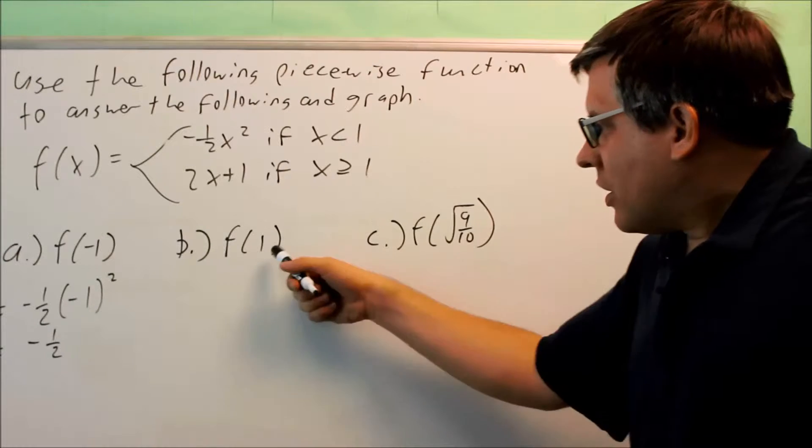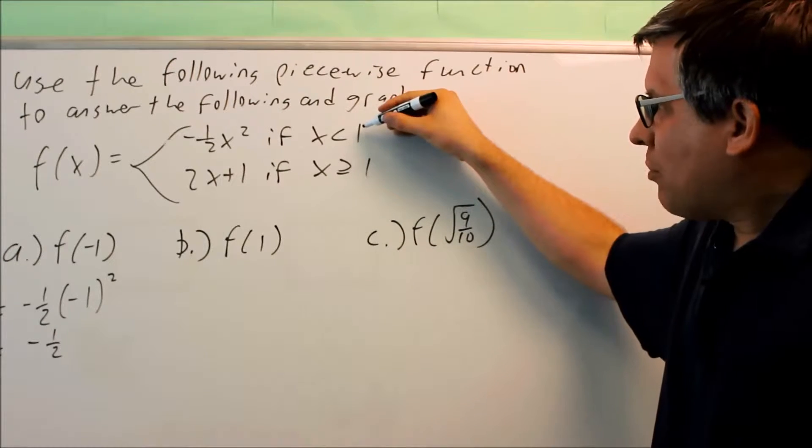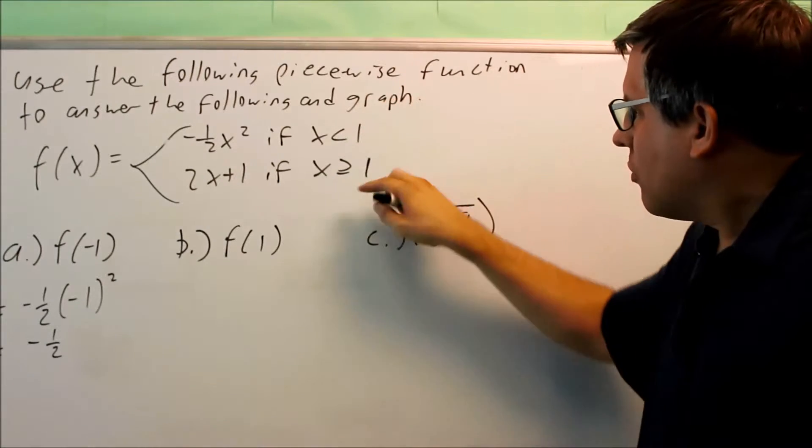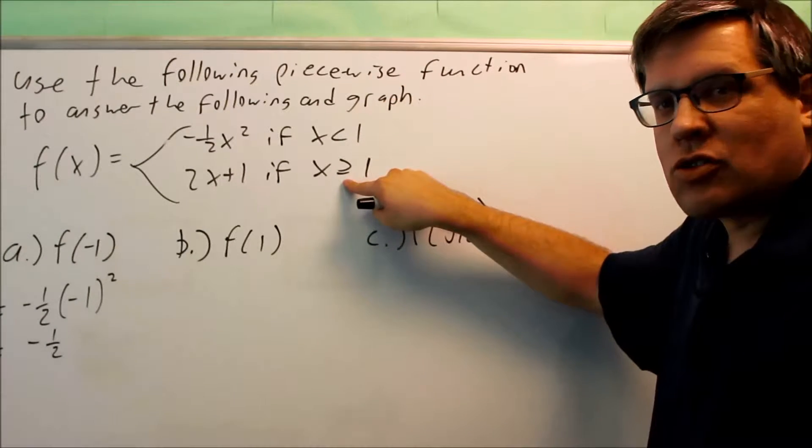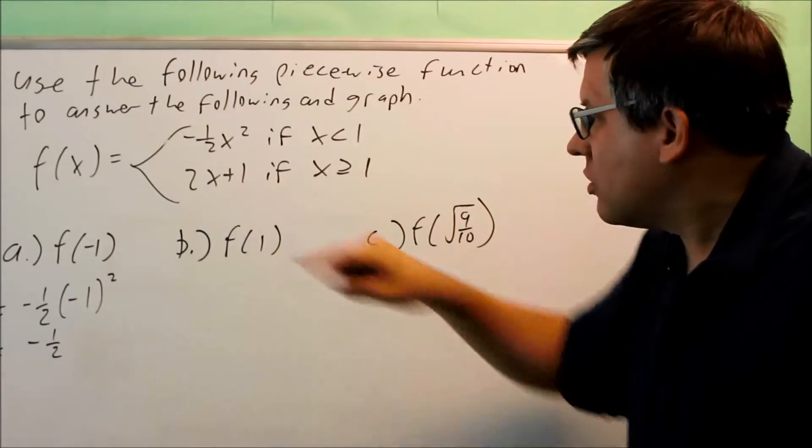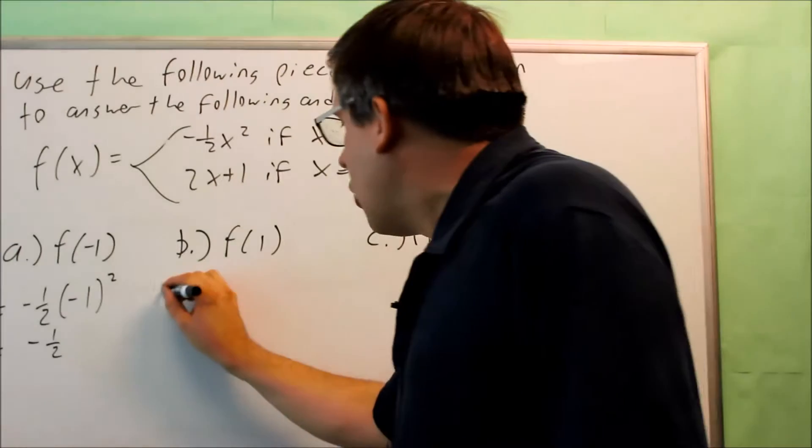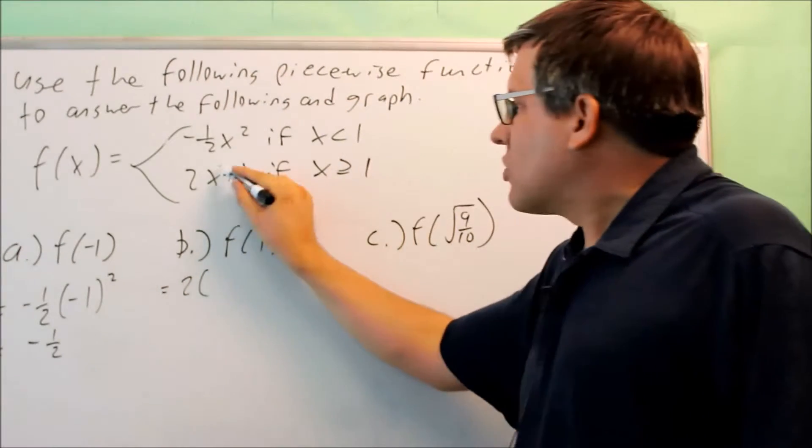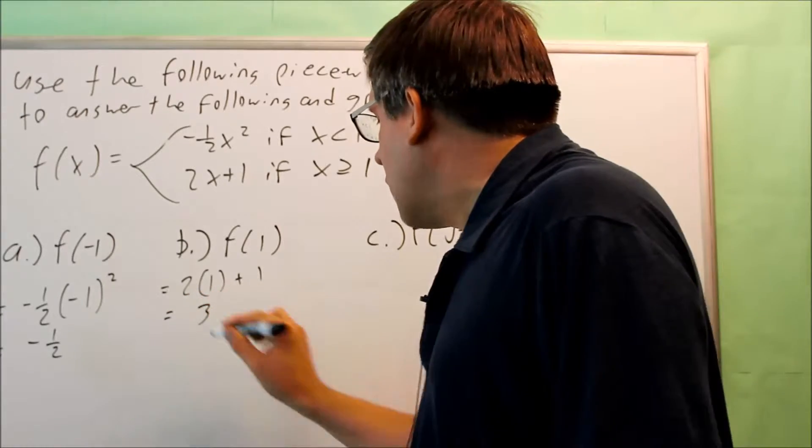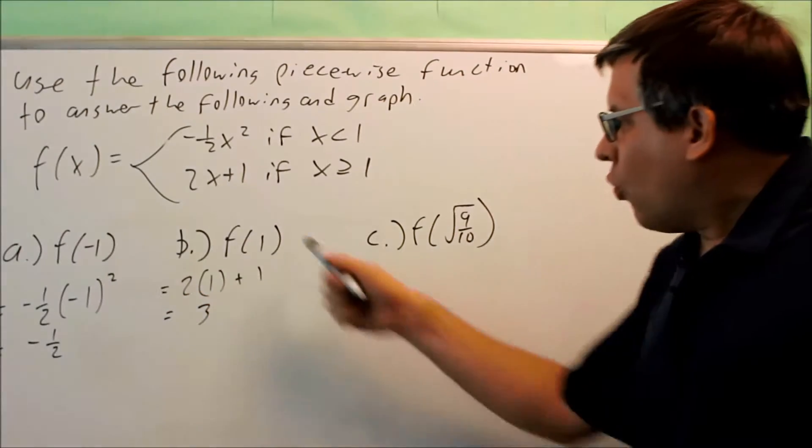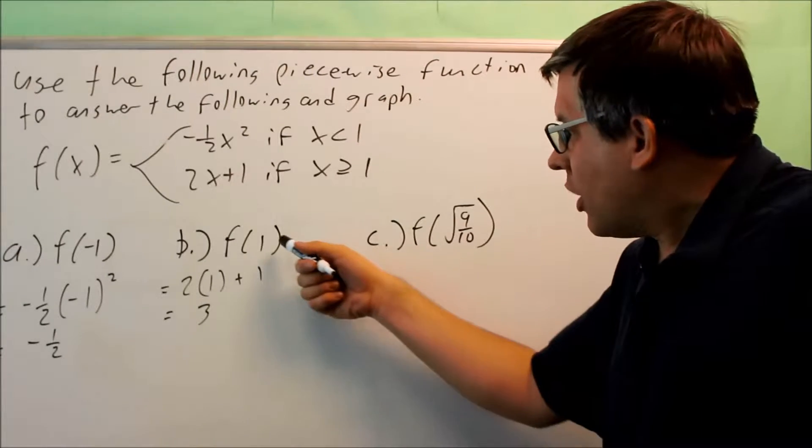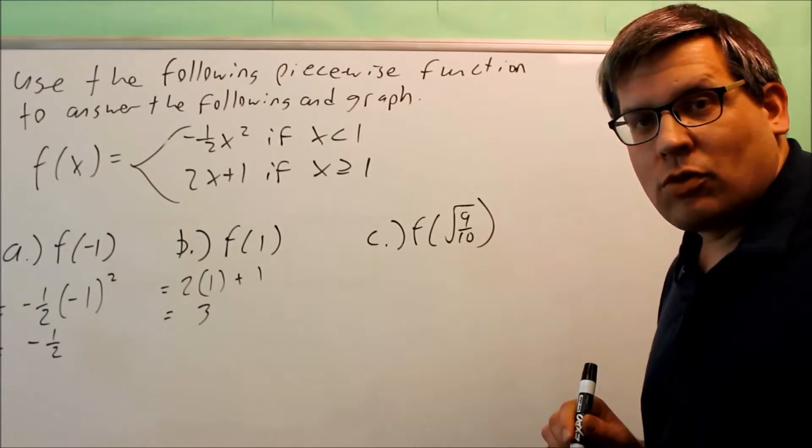For part B, I have 1. Now 1 does not belong to the first one, but it belongs here because you have an equal sign underneath this one. The equal sign means that the 1 is actually included, so we're only going to use the bottom equation this time. 2 times 1 plus 1 gives you 3. So 1, 3 is the point when x is 1, you get a y value of 3.